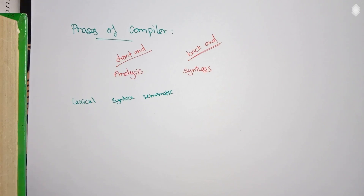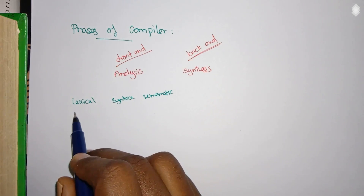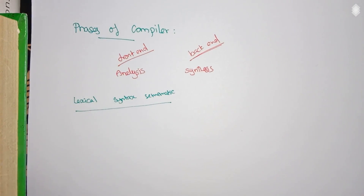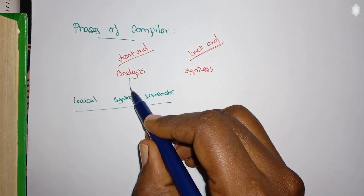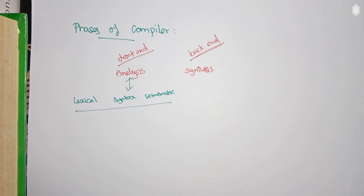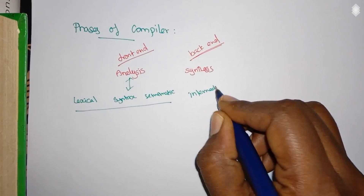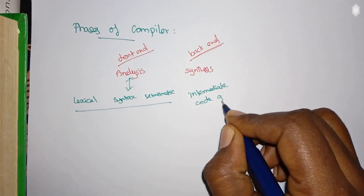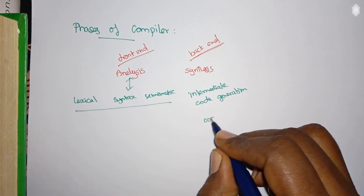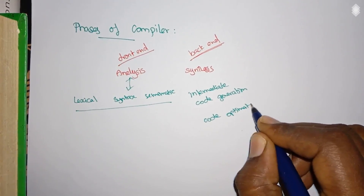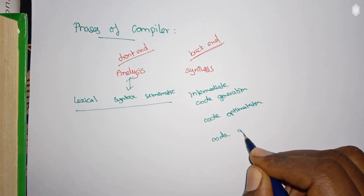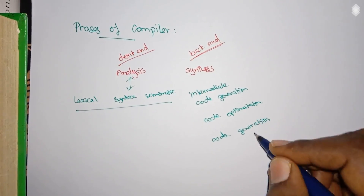The semantic analyzer phase checks the meaningfulness of the code — whether the meaning of the code is correct. It analyzes the meaningful aspect, not the logical aspect. These three phases — lexical, syntax, and semantic — form the analysis phase. Under the synthesis phase, we have intermediate code generation, code optimization, and code generation.